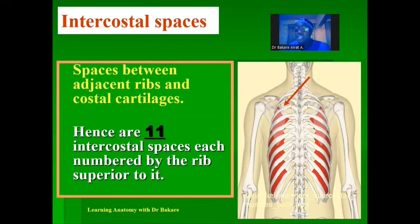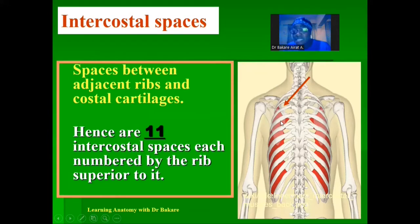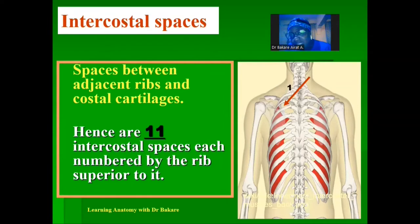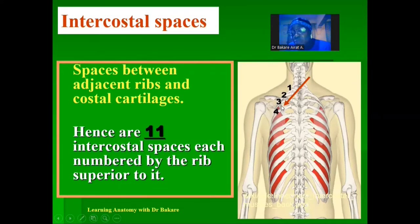Because we have 12 pairs of ribs — 12 on the right and 12 on the left — the number of intercostal spaces will be 11. The intercostal spaces are numbered by the rib that is superior to them. For example, the space between the third and fourth rib is the third intercostal space, because the rib superior to it is the third rib.